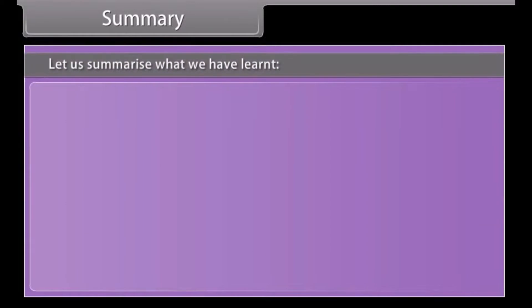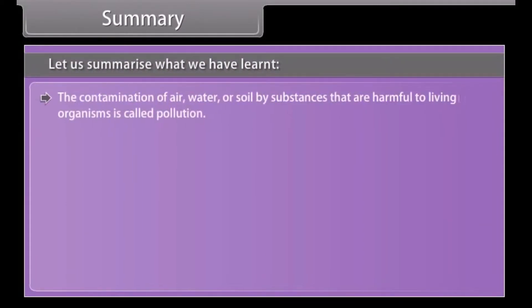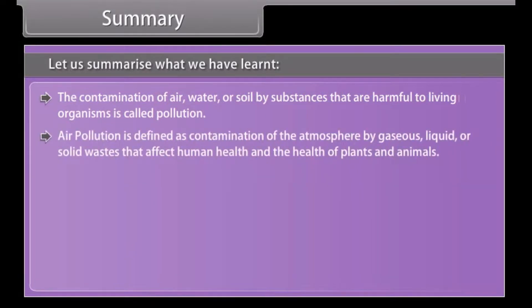The contamination of air, water or soil by substances that are harmful to living organisms is called pollution. Air pollution is defined as contamination of the atmosphere by gases, liquid or solid wastes that affect human health and the health of plants and animals.